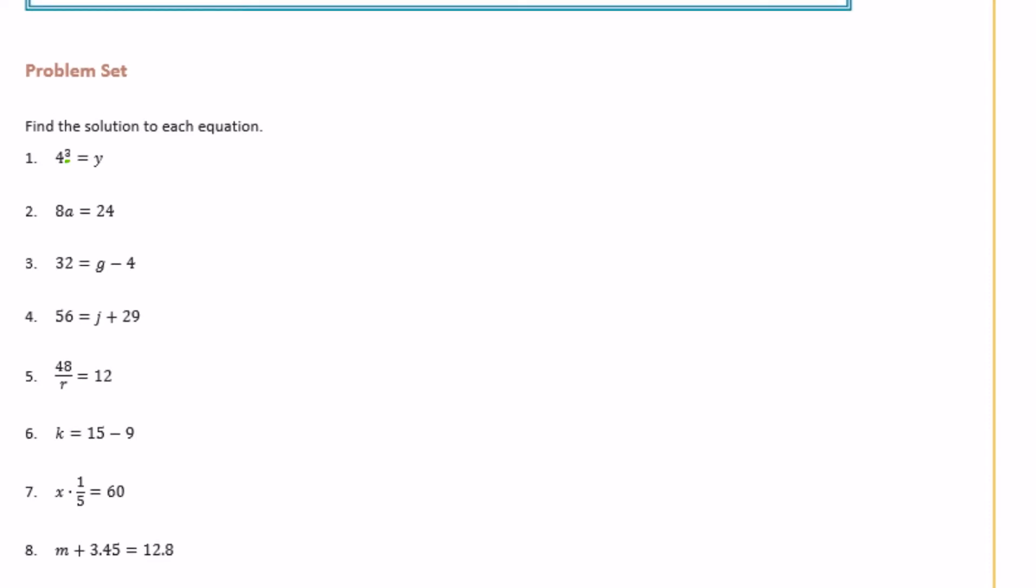That would look like 4 times 4 times 4, which will be equal to—4 times 4 is 16, and 16 times 4 is 64. So y must be equal to 64. Number two: 8a is equal to 24.